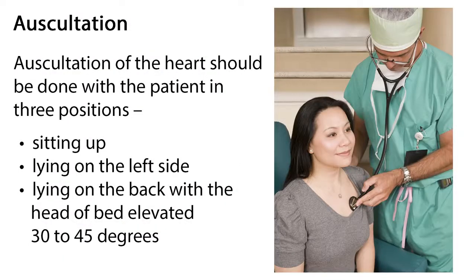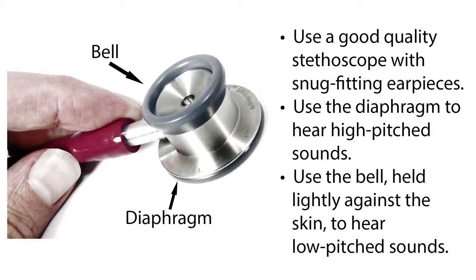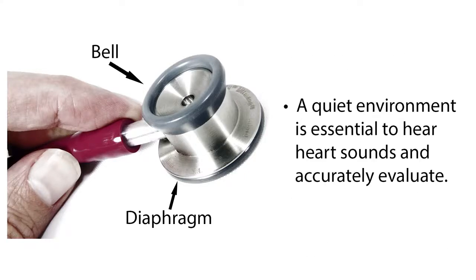Auscultation of the heart should be done with the patient in three positions: sitting up, lying on the left side, and lying on the back with the head of the bed elevated 30–45 degrees. Use a good quality stethoscope with snug-fitting earpieces. Use the diaphragm to hear high-pitched sounds, and use the bell, held lightly against the skin, to hear low-pitched sounds. A quiet environment is essential, so turning off the TV or other background noises may be necessary. Auscultation is best performed directly on bare skin, as clothing can mimic abnormal sounds.